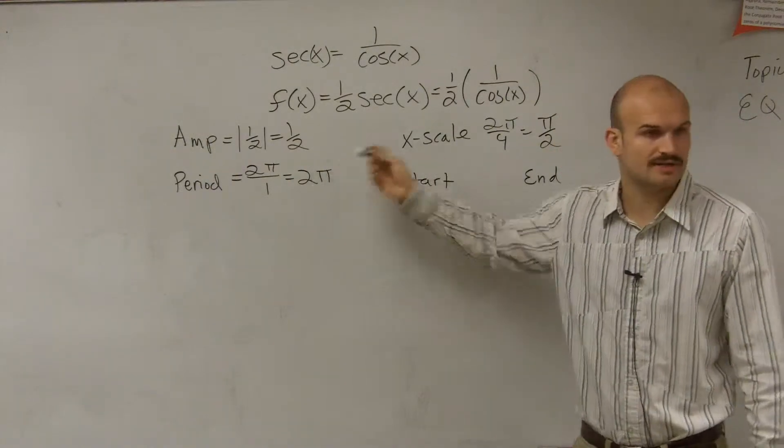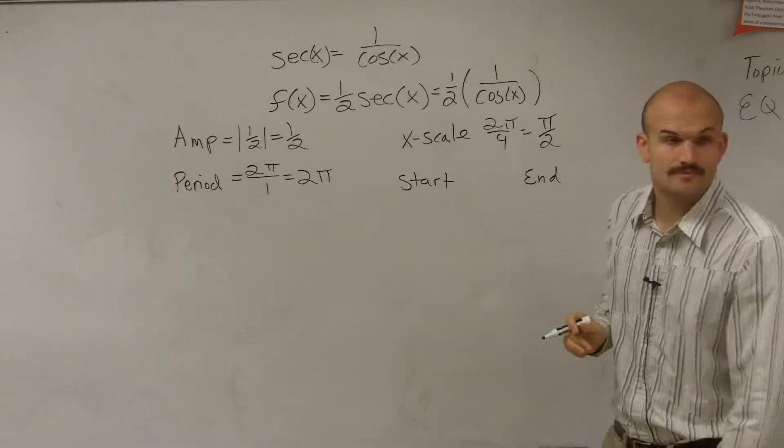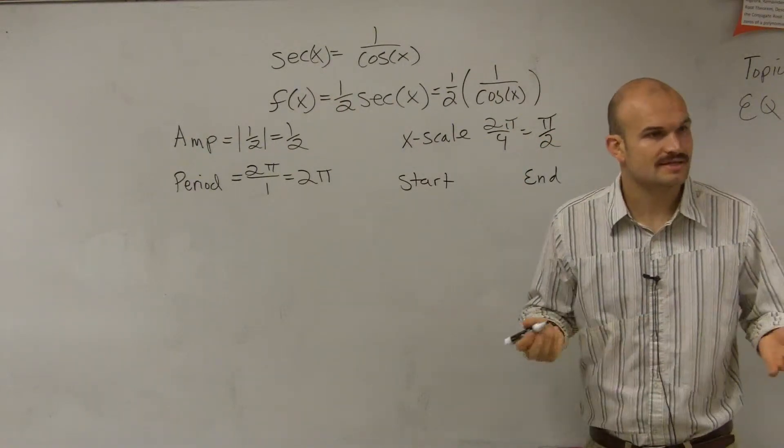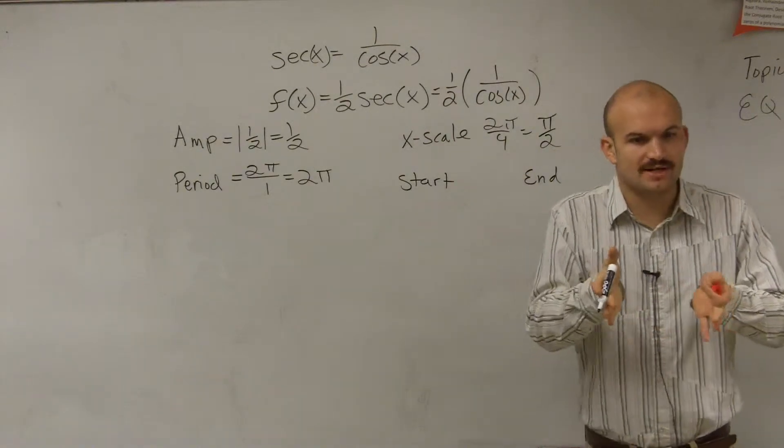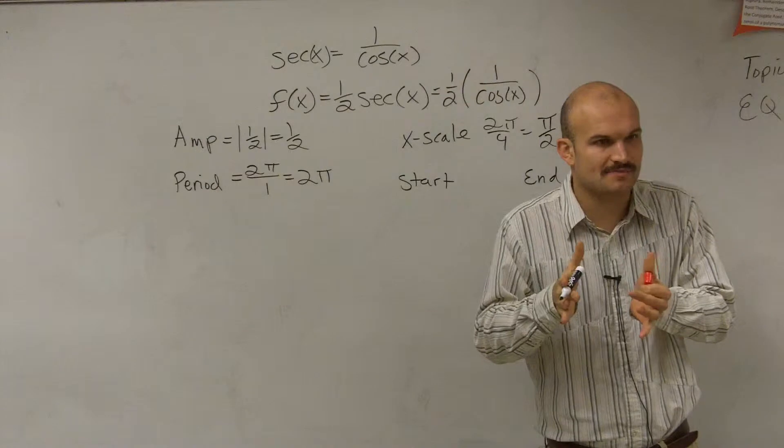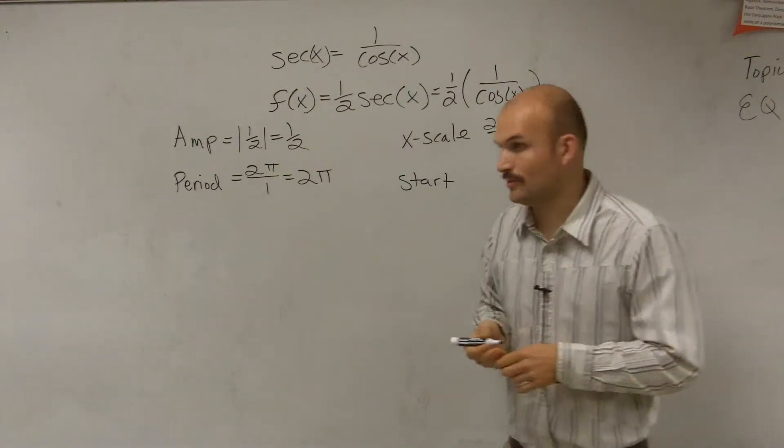So we have pi halves. Then just take your period, divide it by 4, and that's going to be the scaling that we're going to use on the x-axis. It is the same thing. That's what I've called it before on other videos, like critical points. But what it means is it's the critical points, but it's the scaling, the distance between the critical points.